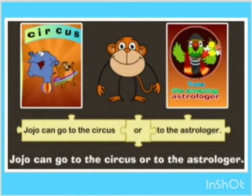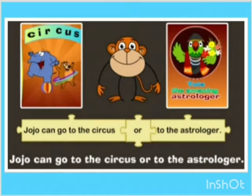Now, this is Jojo. Jojo is given options: circus and astrologia. Jojo can go to the circus. Jojo can go to the astrologia. Now let's join it: Jojo can go to the circus or to the astrologia. The conjunction 'or' is added and the sentence is joined.